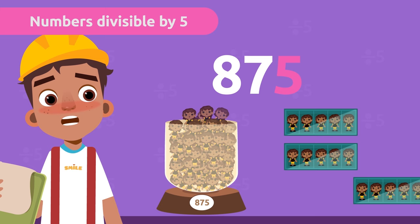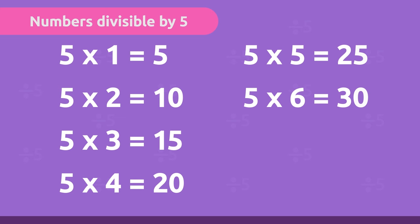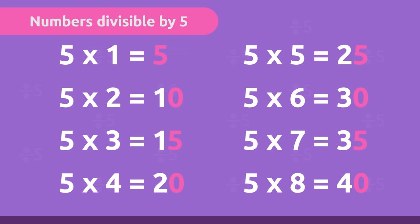There are 875 dolls, so if we store them five by five, there will be none left over. Think of the multiplication table of five — let's look at the last digits. All the results end in five and zero, as in our divisibility rule of five.